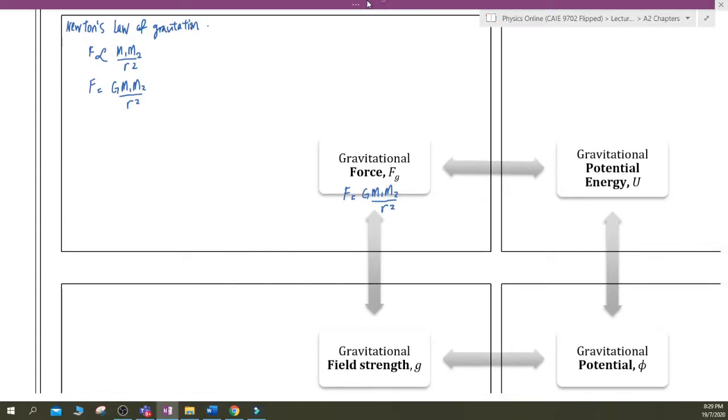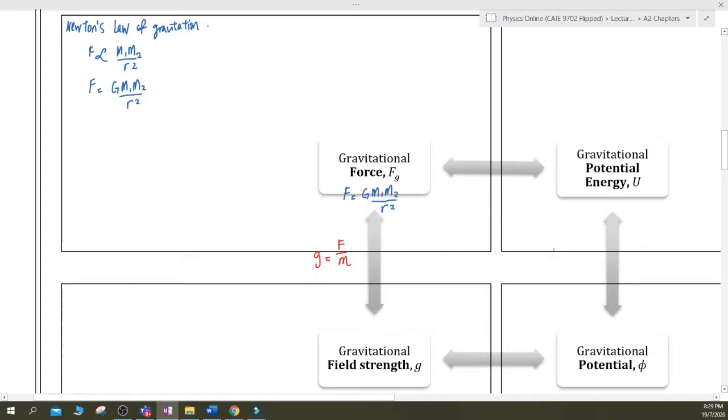So when we have force, we definitely have a force field. And to represent how strong that field is, this is gravitational field strength, which is known as force per unit mass. F equals mg, g equals F over m. So both of these are actually vectors.